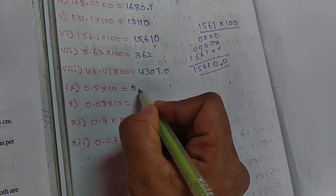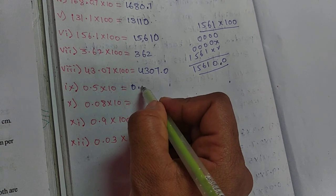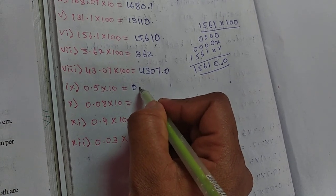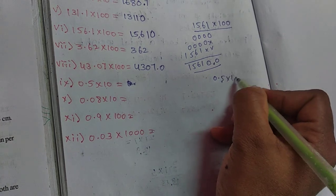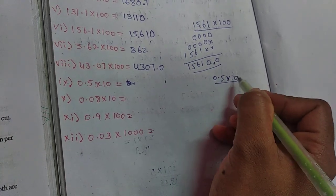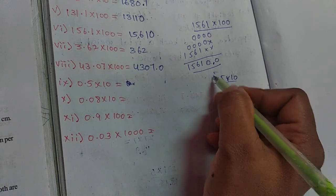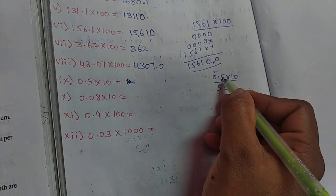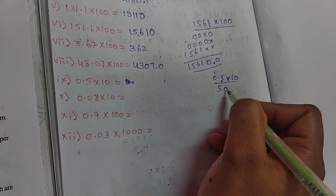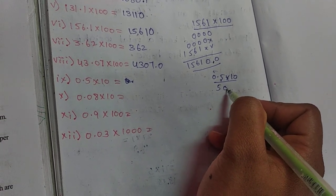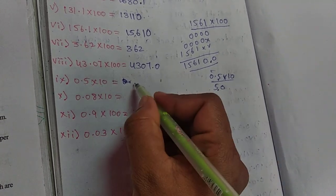Next, 0.5 into 10, the answer is 5. I'll show you: 0.5 into 10, multiplying by 10 directly: 10 times 5 is 50. Point after 1 decimal place, so in the answer from the right side we count 1 digit. Here we should place the point. So 5 is the answer.